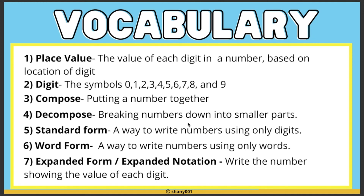Let's look at the vocabulary words for this week. Number one: place value — the value of each digit in a number based on the location of the digit. Number two: digit — the symbols 0, 1, 2, 3, 4, 5, 6, 7, 8, and 9. Number three: compose — putting a number together. Number four: decompose — breaking numbers down into smaller parts. Number five: standard form — a way to write numbers using only digits. Number six: word form — a way to write numbers using only words. Number seven: expanded form, also expanded notation — write the number showing the value of each digit.